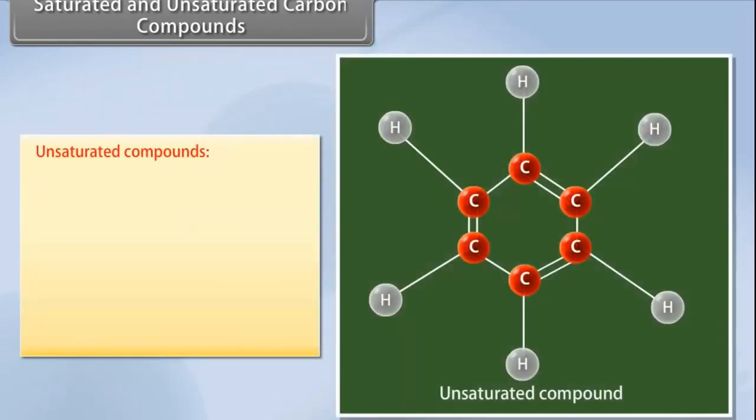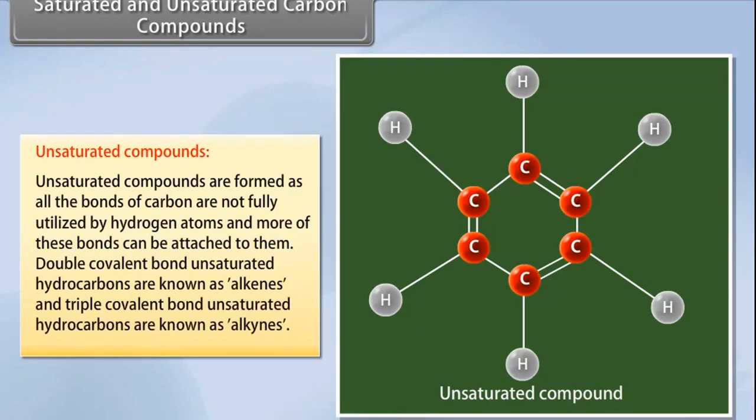Unsaturated compounds: Compounds of carbon and hydrogen that contain double or triple covalent bonds between the carbon atoms are called unsaturated hydrocarbons. These are formed as all the bonds of carbon are not fully utilized by hydrogen atoms, and more of these bonds can be attached to them. Double covalent bond unsaturated hydrocarbons are known as alkenes, and triple covalent bond unsaturated hydrocarbons are known as alkynes.